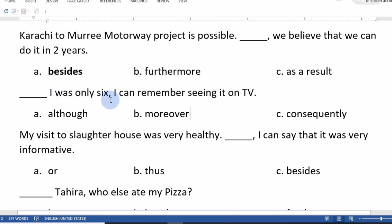I was only 6, I can remember seeing it on TV. The options are moreover, although, or consequently. Although I was only 6 is correct. Although I was only 6 years old, I remember that we were watching it on TV.